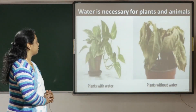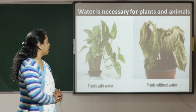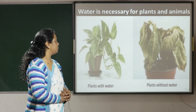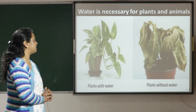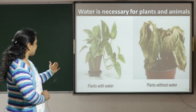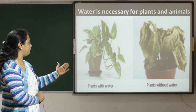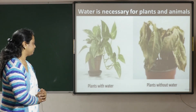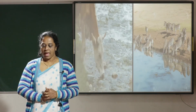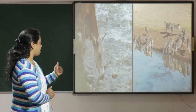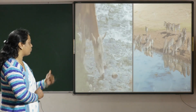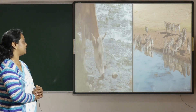Water is necessary for plants and animals. Like all living things, plants need water to grow and to stay alive. You can see the picture showing a plant with water and a plant without water. Animals too need water for their body to function. Animals gain water not only by drinking but also through the food which they eat.